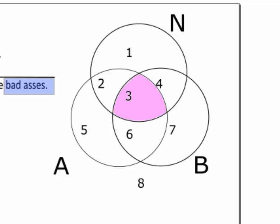Region 3 is the possibly empty intersection of all three sets. It represents ninja badasses who are also actors, or badass actors who are also ninjas. That is, if there are any such things, this is where they would have to be.